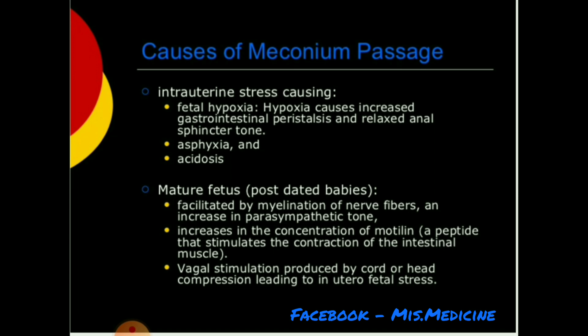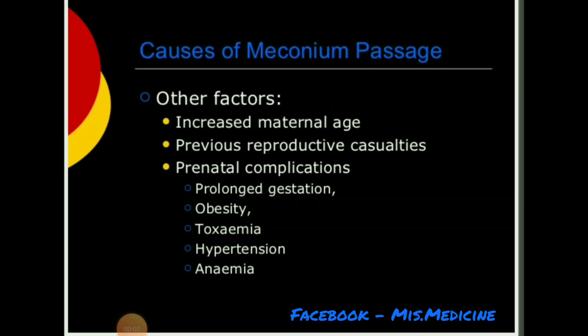Causes of meconium passage include: intrauterine stress causing fetal hypoxia, asphyxia and acidosis. Fetal hypoxia causes increased gastrointestinal peristalsis and relaxed anal sphincter tone. In mature post-term fetuses, myelination of nerve fibers increases parasympathetic tone and motilin (a peptide that stimulates intestinal muscle contraction). Vagal stimulation from cord or head compression also leads to in utero fetal stress.